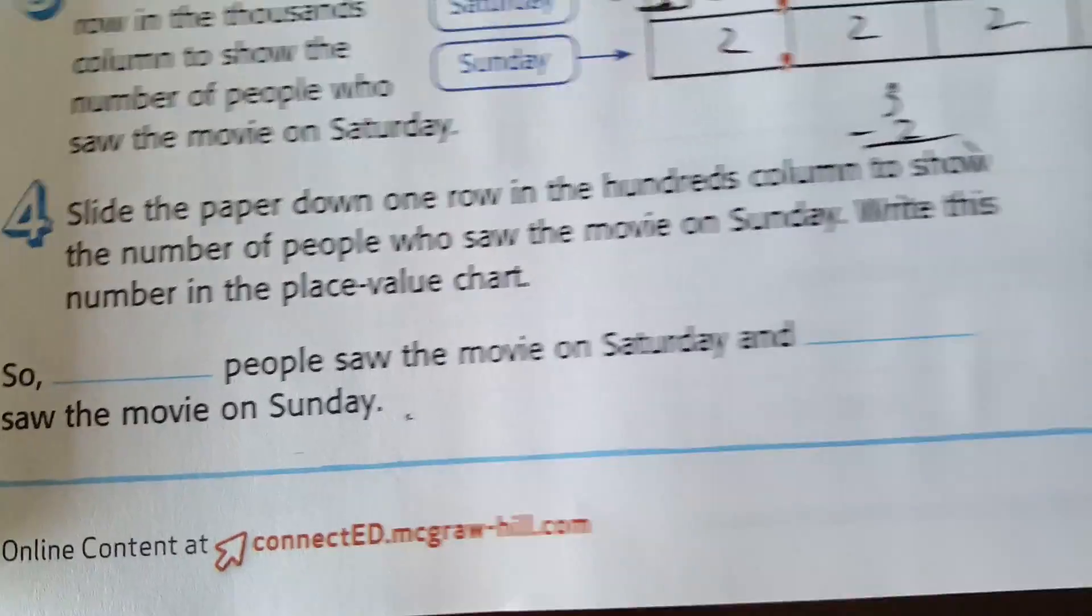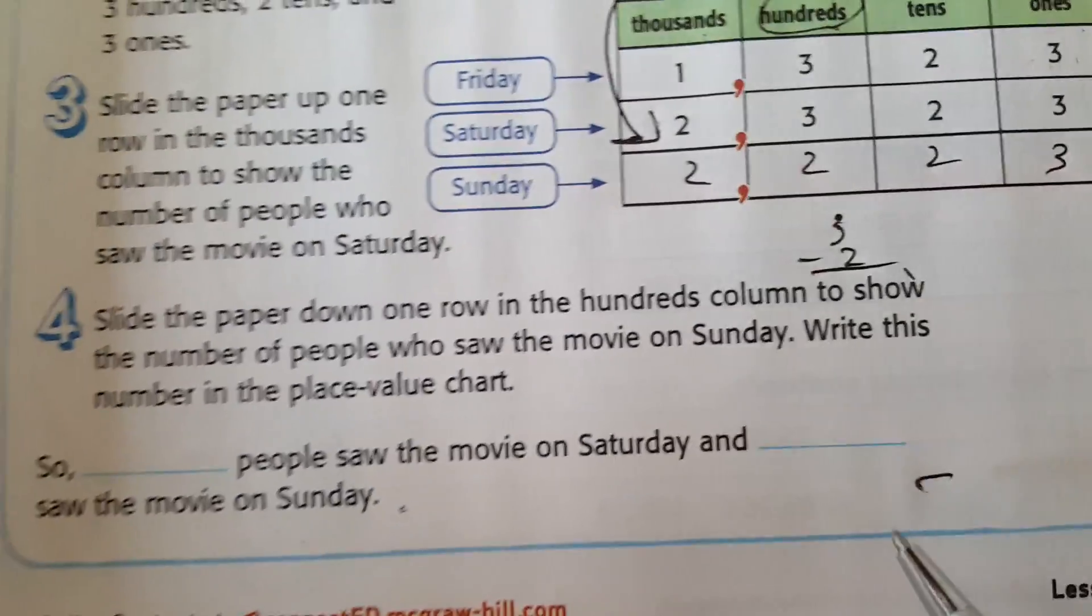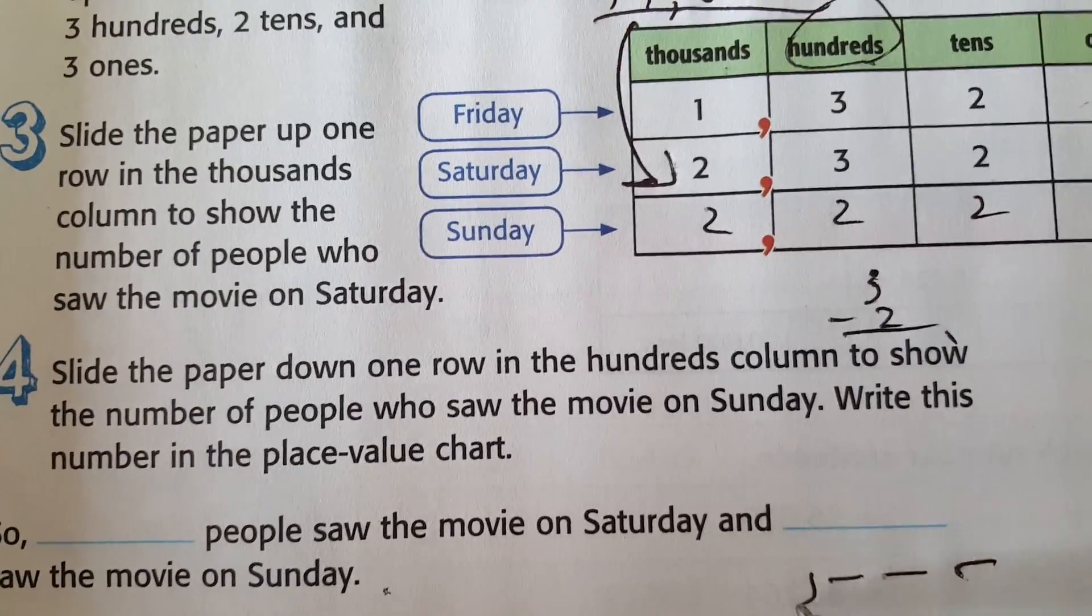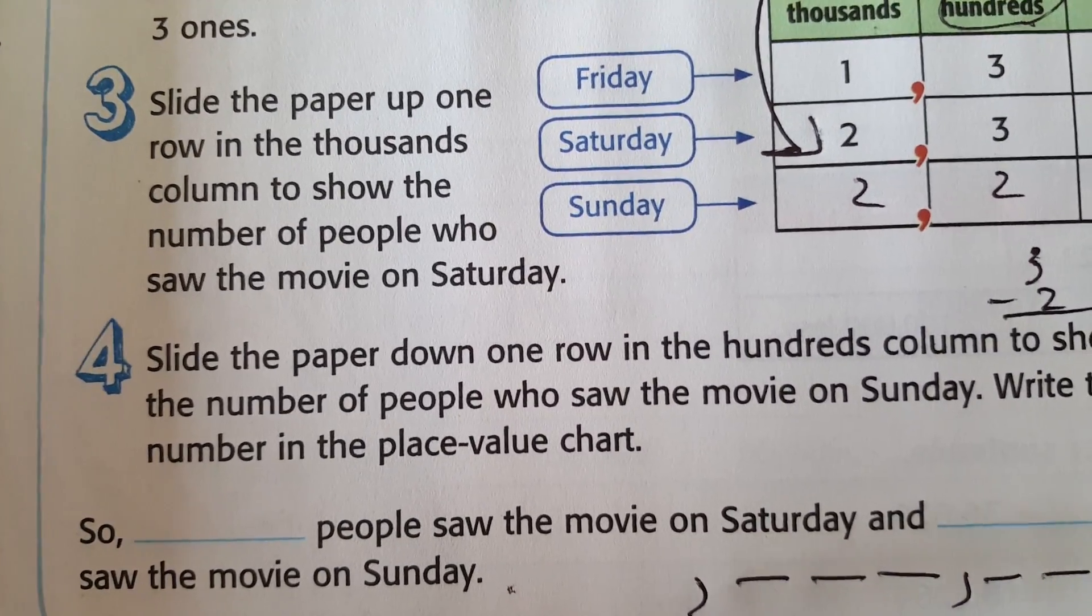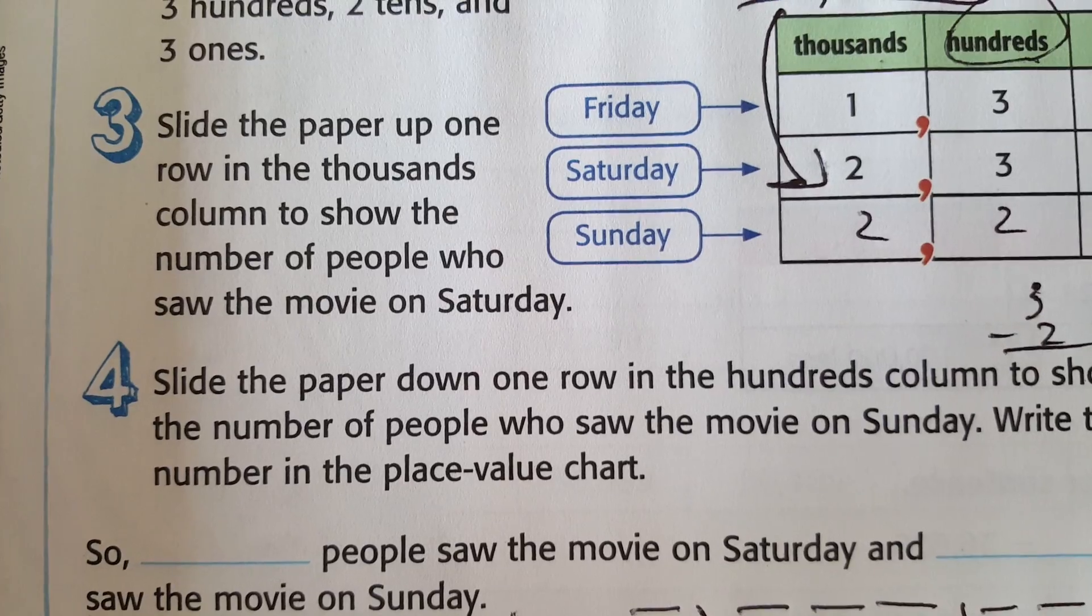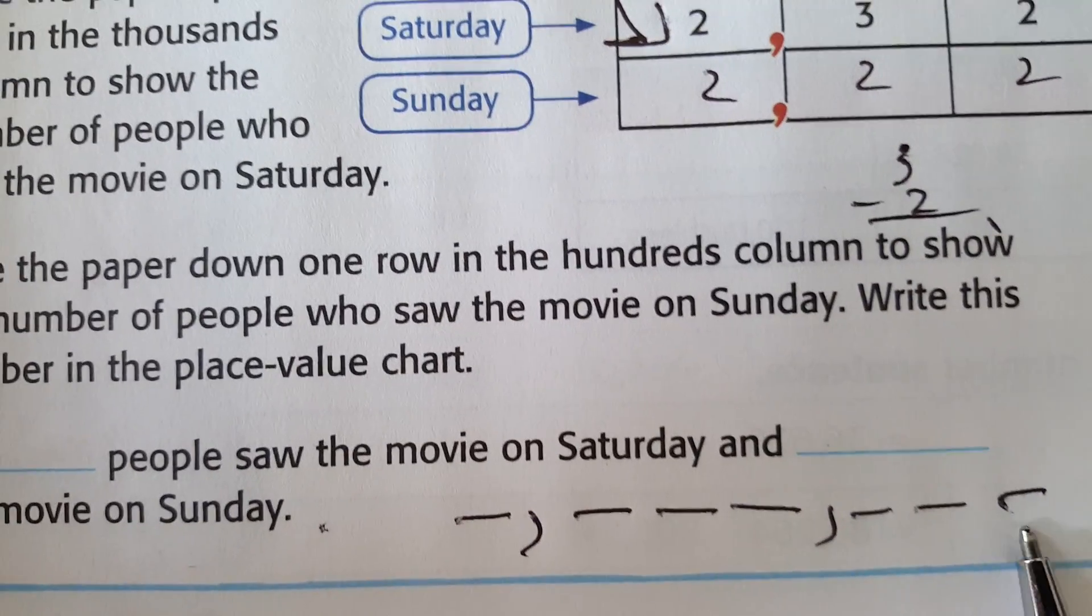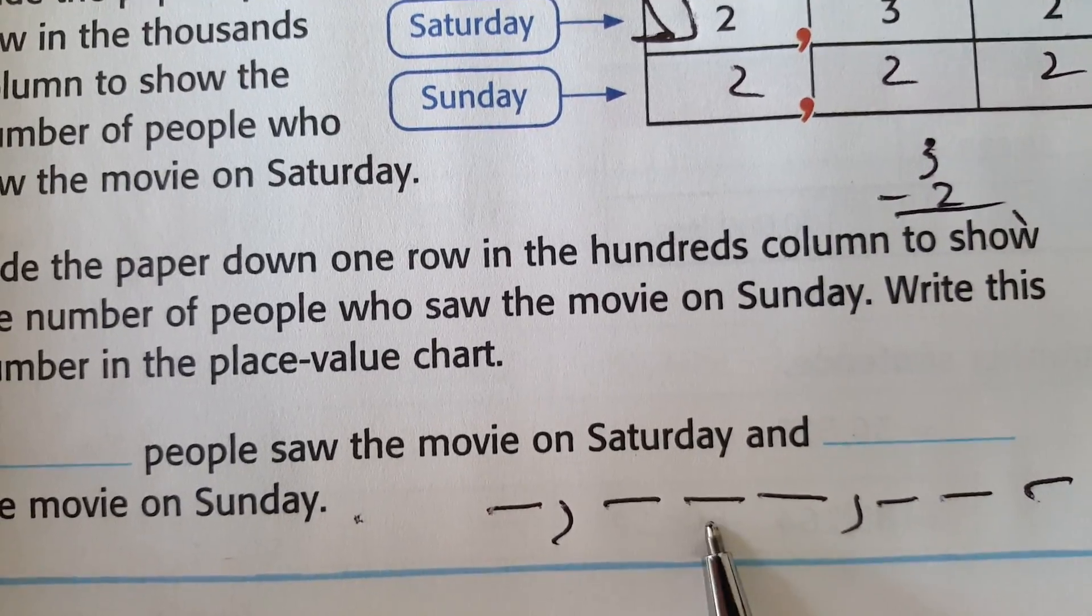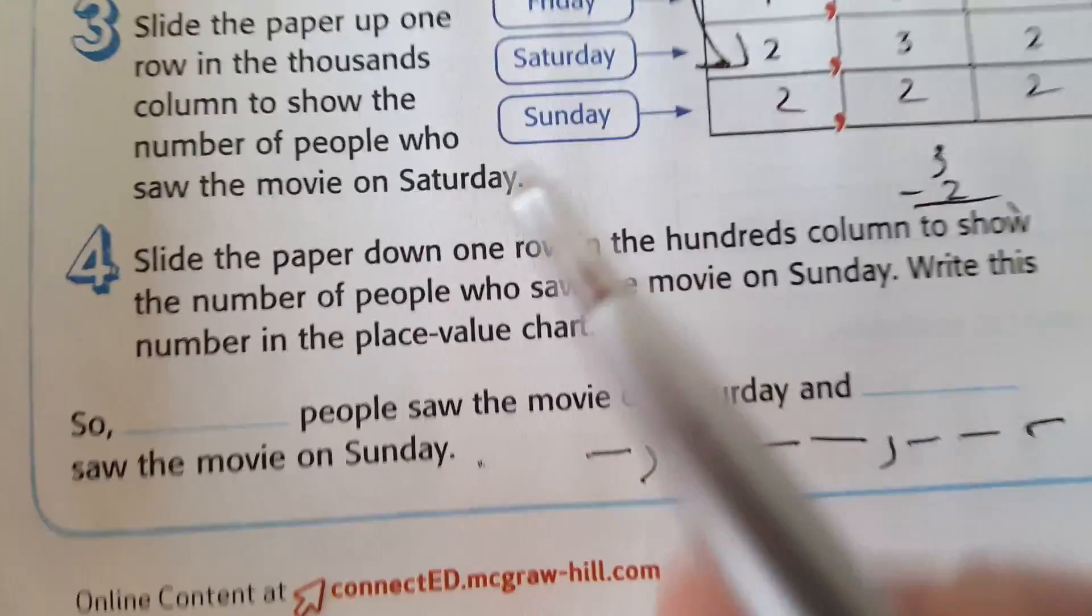So go back to your place value. Remember, you should be able to do this by now. Ones, tens, hundreds, thousands, ten thousands, hundred thousands, millions. Let's try it again. Ones, tens, hundreds, thousands, ten thousands, hundred thousands, millions. Memorize it. Like a year ago.